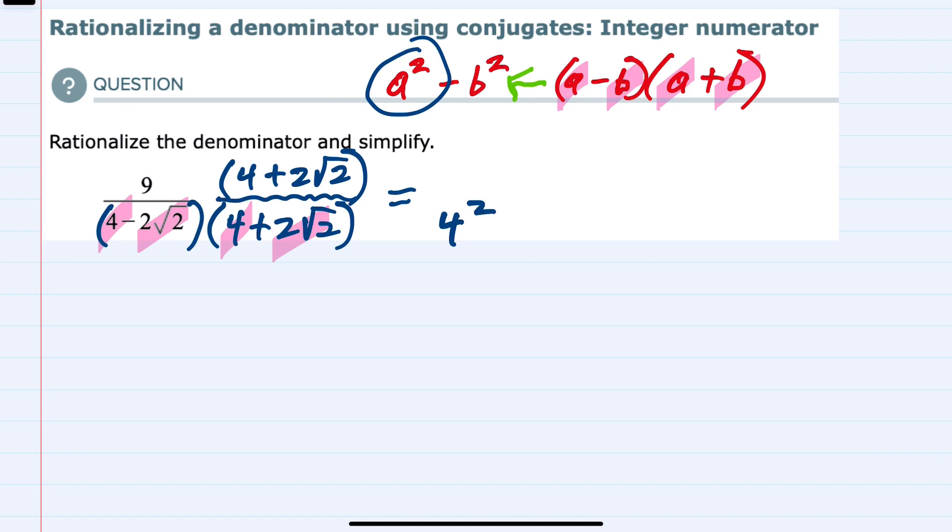minus the second term squared. So that's minus, here, 2 square roots of 2 squared.